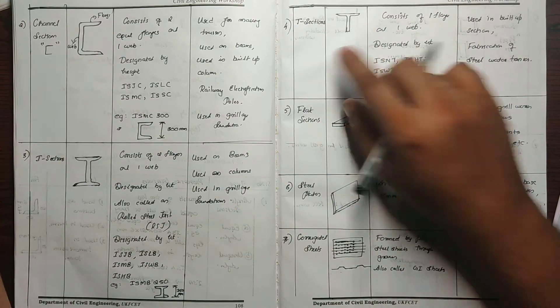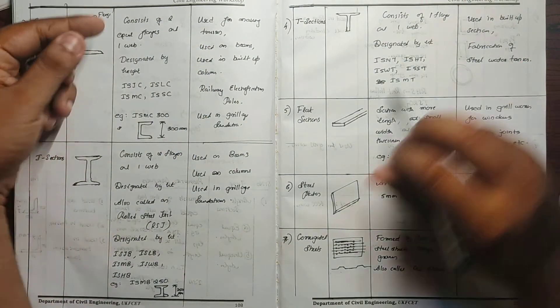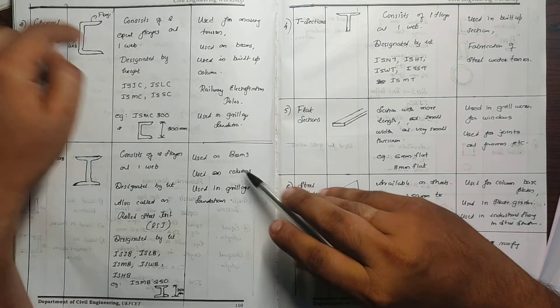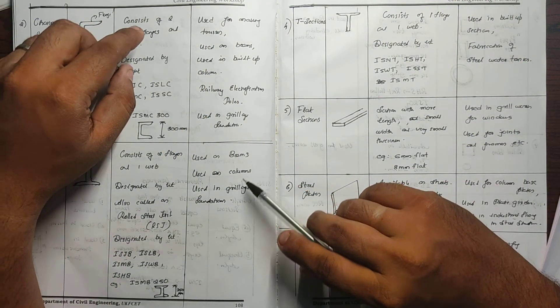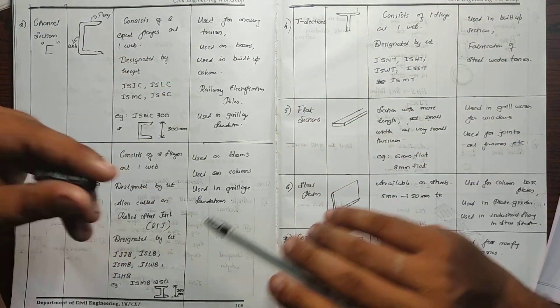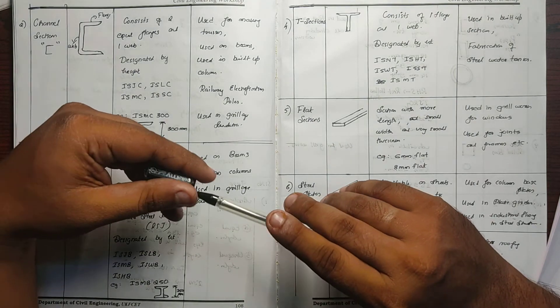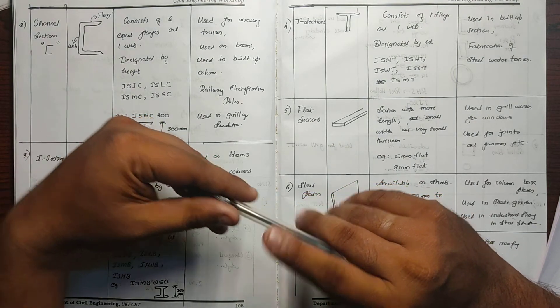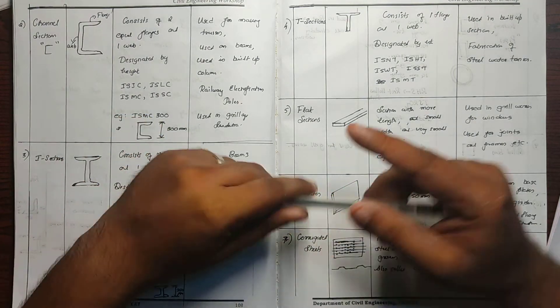This is the T-Section. If you want to use beams and columns, you can use I-Sections, but the T-Section is also available and used in specific applications.